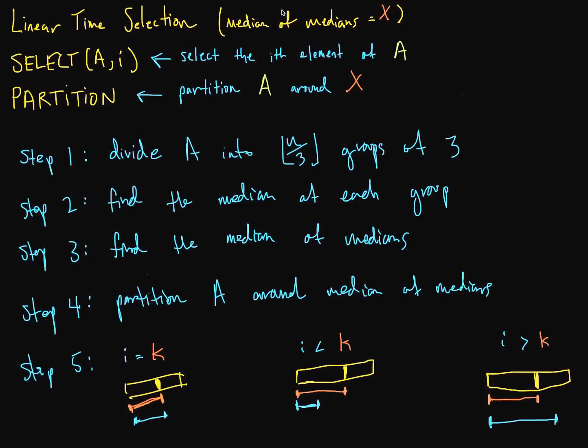Welcome to our 16th video on data structures and algorithms. We're talking about our linear time selection algorithm. The idea was to find a good split for partition, to select the ith element out of an array. We did this in five steps. First, we divided the array into groups — for our example here, we're going to use n over 3.